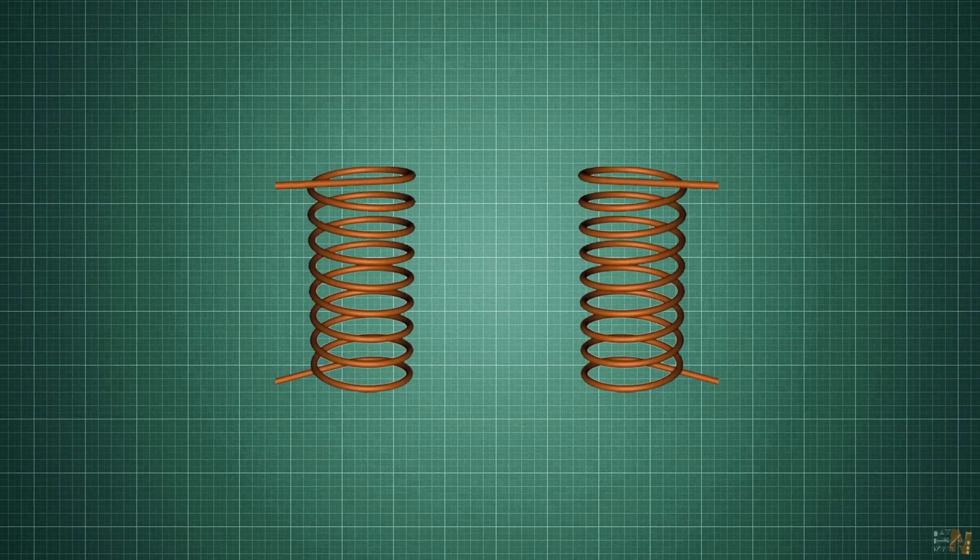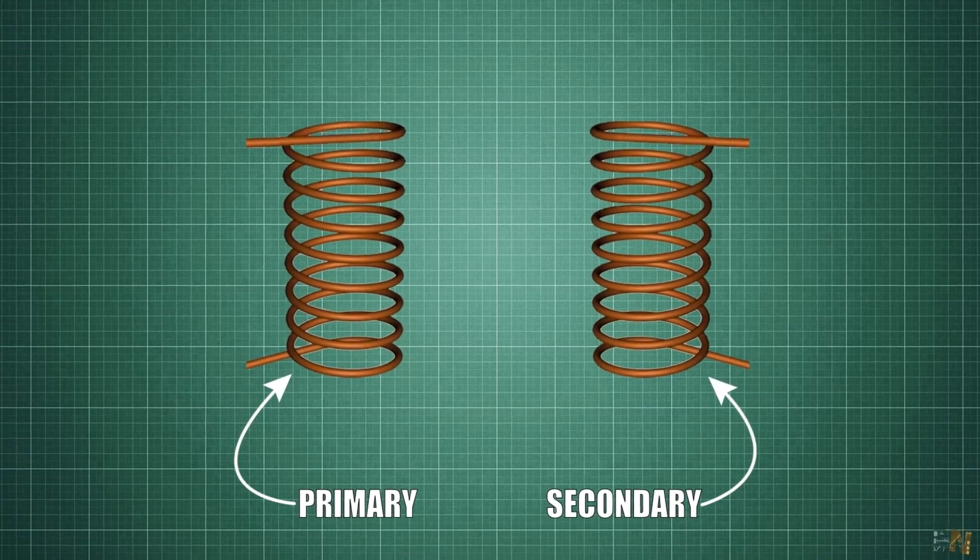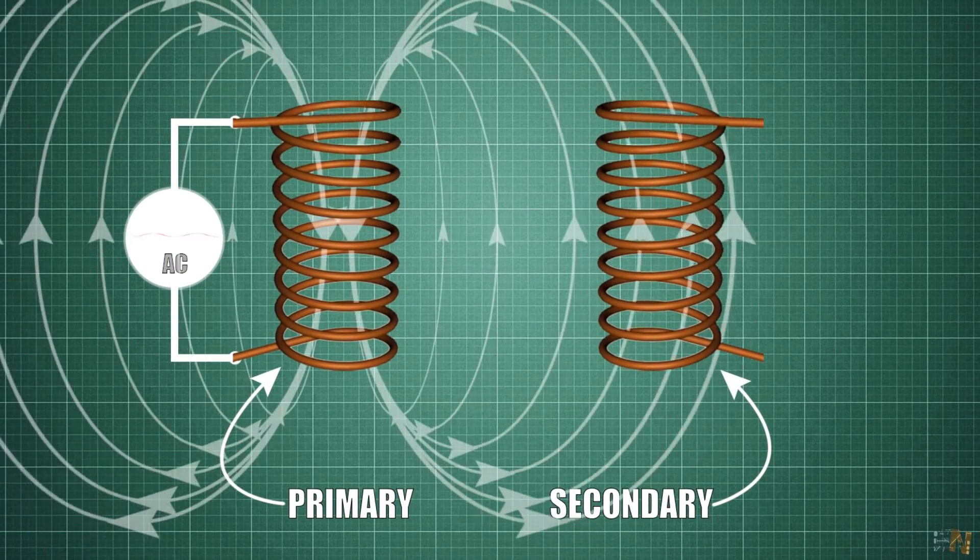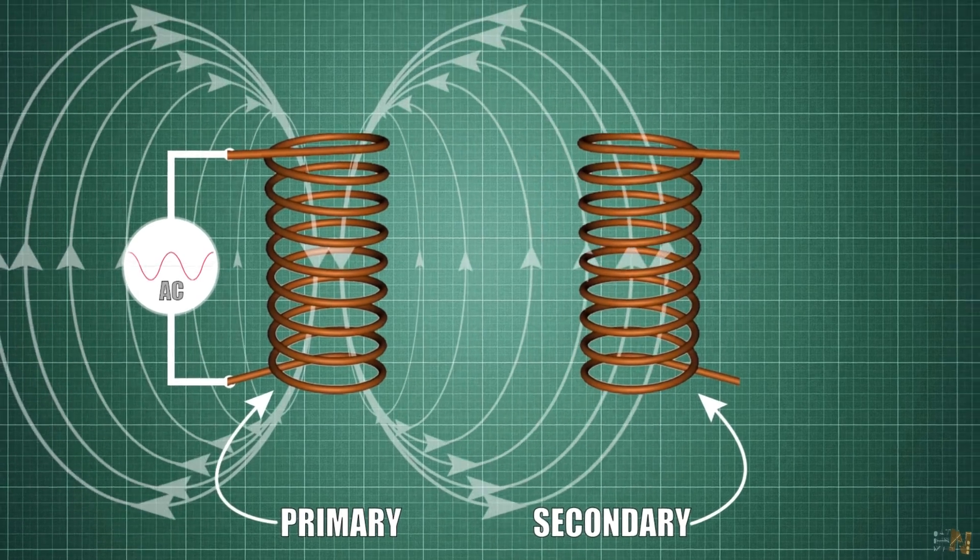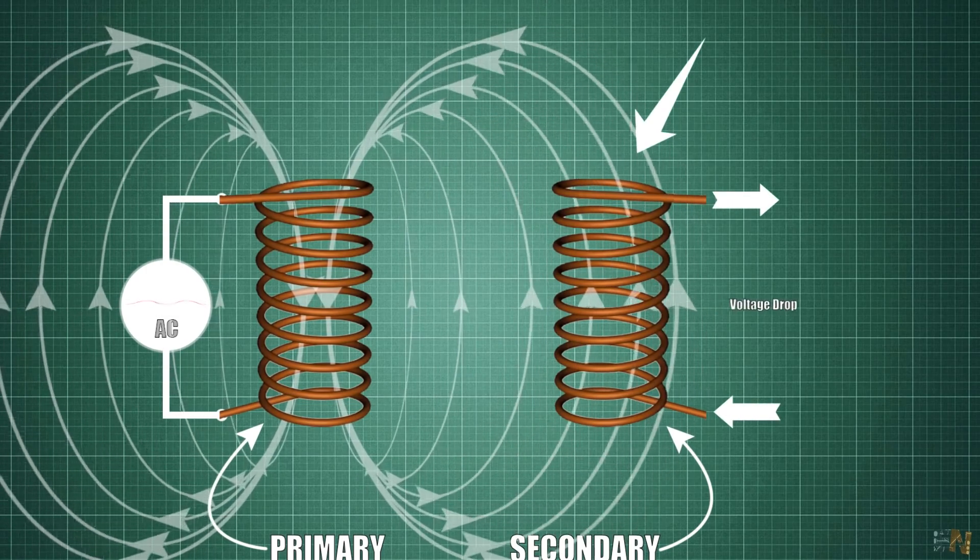So now we put the two coils together in a single phase transformer. These are called primary and secondary. The primary will have the AC voltage connected, so an alternating magnetic flux is created around. By Faraday law, this magnetic flux reaches the secondary coil and induces current in that wire, so a voltage drop at the output.